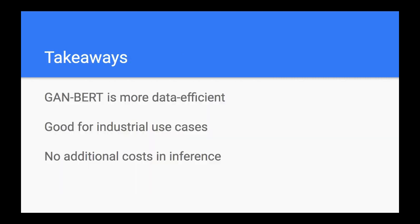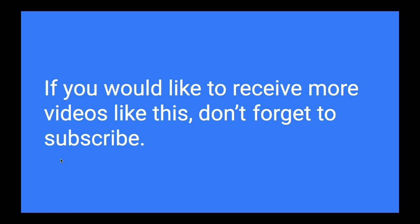The takeaways for today: the GAME-BERT model is very data efficient and does a great job in low-resource settings. It's really good for industrial use cases because in the real world most data is unlabeled, and if we can leverage unlabeled data we will have much better realistic performance. Another advantage is it has no additional cost at inference — even though we train a generator, at inference time we completely discard it. Congratulations, we've reached the end of today's video. If you'd like to receive more deep learning videos in the future, don't forget to subscribe, and have a nice day.